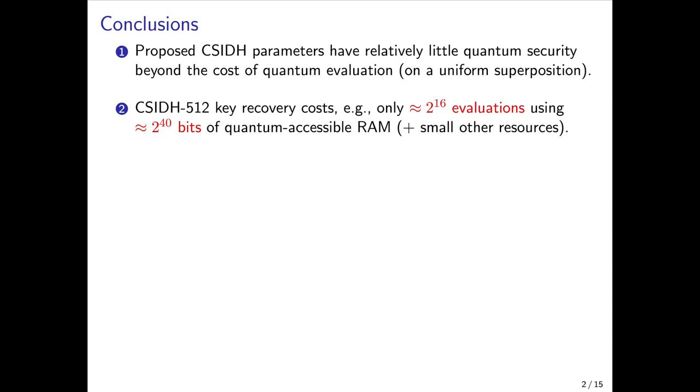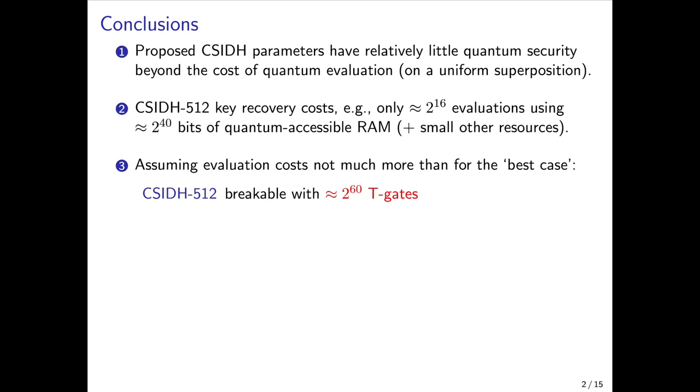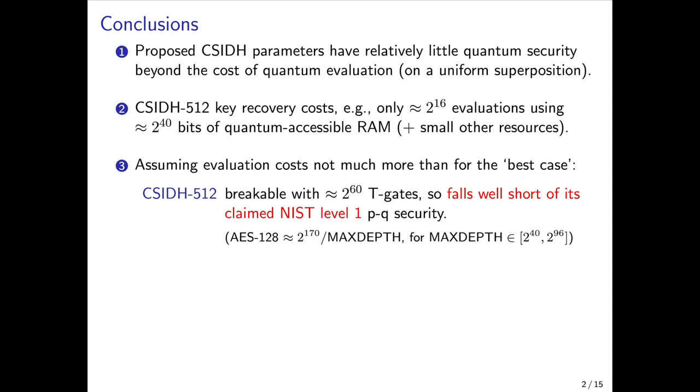While the main focus of this work is on the number of evaluations needed to mount an attack, we also give some estimates for the total quantum T-gate complexity of a complete attack. This is assuming that evaluating the function on a uniform superposition costs not much more than for evaluating on the so-called best-case distribution. Under this assumption, attacking CSIDH-512 can be done with only about 2^60 T-gates and 2^40 bits of RAM.